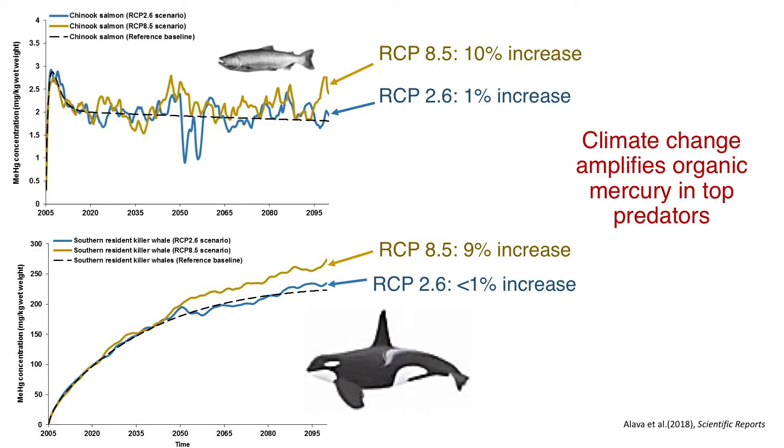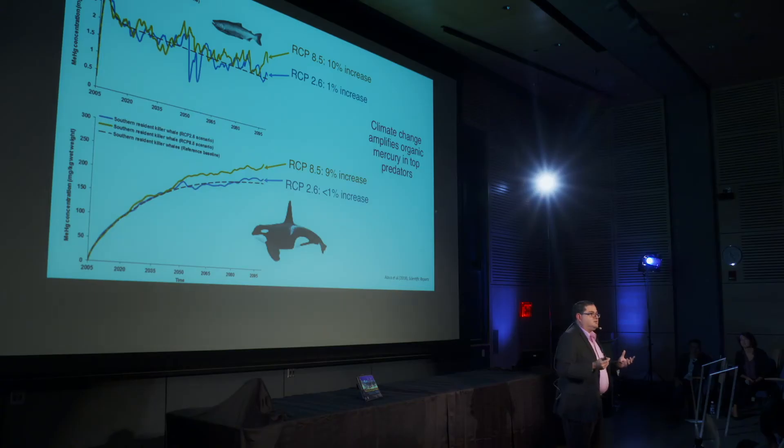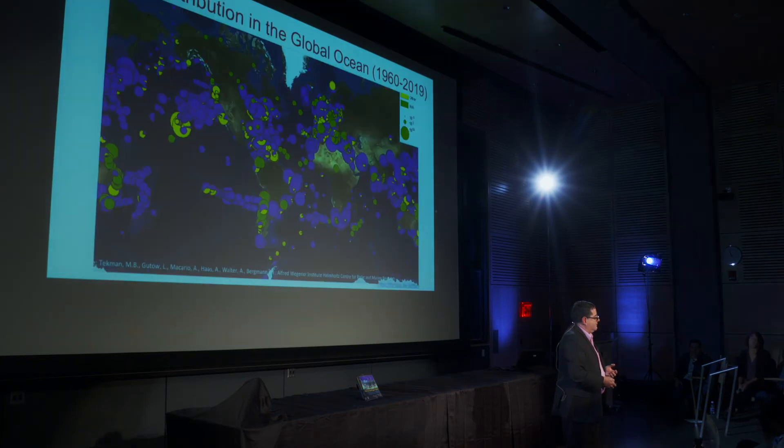These animals are basically facing an exacerbation of pollutants. One of them is PCBs and the other is mercury, as we see in the figure. We see that this increase can be as high as 9 percent for the case of killer whales, and for Pacific salmon can exceed 10 percent. So these top predators are very sensitive to the response in the face of climate change forcing, driven by sea surface temperature, and acidification may also play an important role in the cycling of methylmercury.